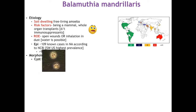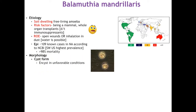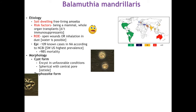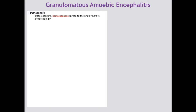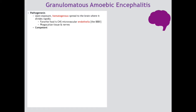Morphologically, Balamuthia will encyst in unfavorable conditions into a spherical cyst with a central pore (ostium). When conditions allow, the trophozoite will escape through that central ostium to feed and replicate. Both forms are infectious and can be found in human tissue on biopsy. The pathology associated with Balamuthia is granulomatous amoebic encephalitis (GAE). Upon exposure, it spreads hematogenously to the CNS where it feeds on its favorite food — the microvascular endothelia, i.e., the blood-brain barrier. It can also phagocytize tissue and nerves. In a competent patient, the immune response is a type 4 hypersensitivity reaction, hence 'granulomatous.'